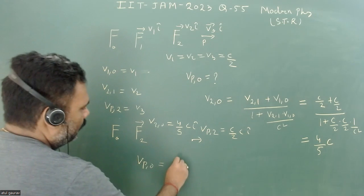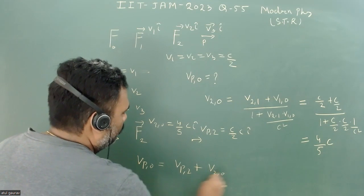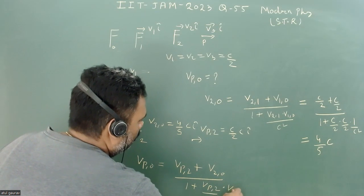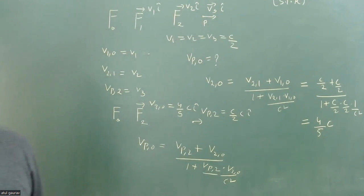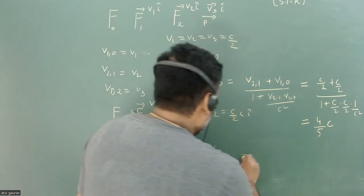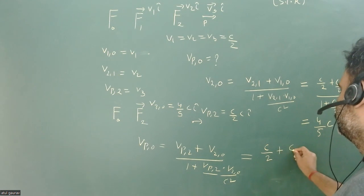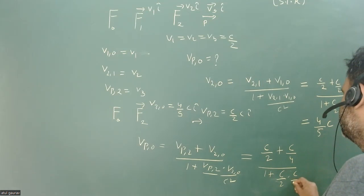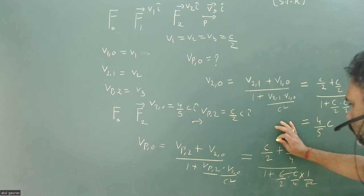We now calculate the velocity of the particle with respect to F0: it equals (velocity of particle w.r.t. F2 + velocity of F2 w.r.t. F0) / (1 + velocity of particle w.r.t. F2 × velocity of F2 w.r.t. F0 / c²). Substituting: velocity of particle w.r.t. F2 is c/2 and velocity of F2 w.r.t. F0 is 4c/5.